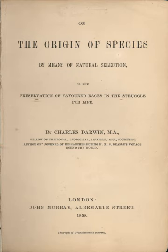Wernerians thought strata were deposits from shrinking seas, but James Hutton proposed a self-maintaining infinite cycle, anticipating uniformitarianism. Charles Darwin's grandfather Erasmus Darwin outlined a hypothesis of transmutation of species in the 1790s, and Jean-Baptiste Lamarck published a more developed theory in 1809. Both envisaged that spontaneous generation produced simple forms of life that progressively developed greater complexity, adapting to the environment by inheriting changes in adults caused by use or disuse — a process later called Lamarckism. Lamarck thought there was an inherent progressive tendency driving organisms continuously towards greater complexity, in parallel but separate lineages with no extinction.